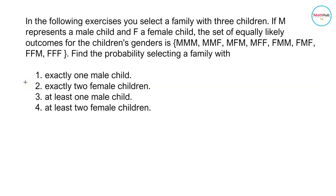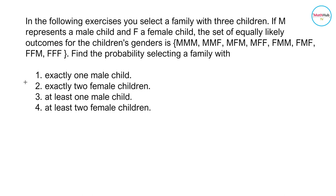In this exercise, you select a family with three children. If M represents a male child and F a female child, the set of equally likely outcomes for the children's gender is given by the set here. Find the probability of selecting a family with: 1. exactly one male child, 2. exactly two female children, 3. at least one male child, and 4. at least two female children.